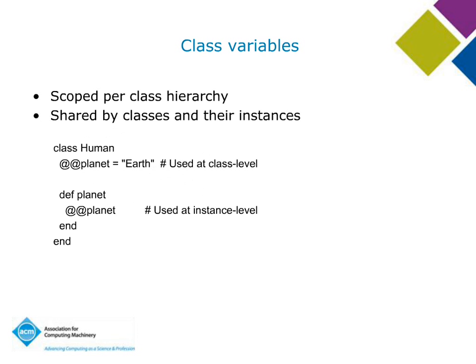Class variables are actually scoped per class hierarchy — if you inherit between classes, you actually share the class variables. Here's a simple example: I assign to a class variable `@@planet = 'Earth'`. Then inside an instance method, that class variable is still in scope, so I can use it at the class level or inside an instance method. Those are the four types of variables in Ruby.